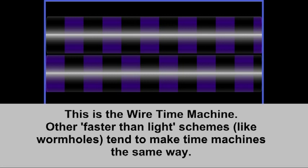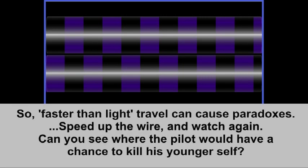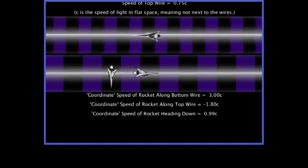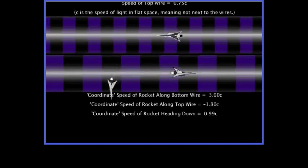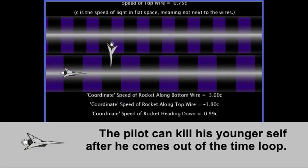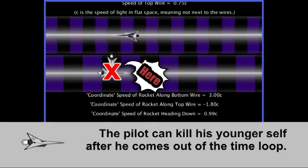Other faster than light travel schemes, like wormholes, tend to make time machines the same way. And if faster than light travel can cause time machines, then it can cause paradoxes. Let's speed up the top wire even more and watch again. Try to spot where the pilot of the rocket would have a chance to kill his younger self. And the answer is, the pilot can kill his younger self right after he comes out of the time loop.